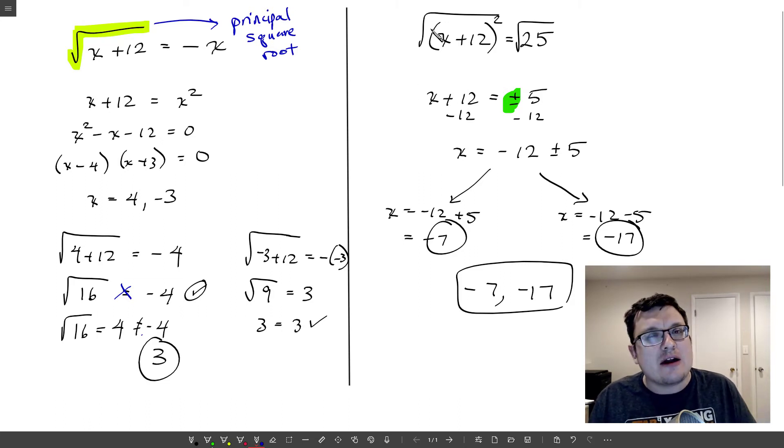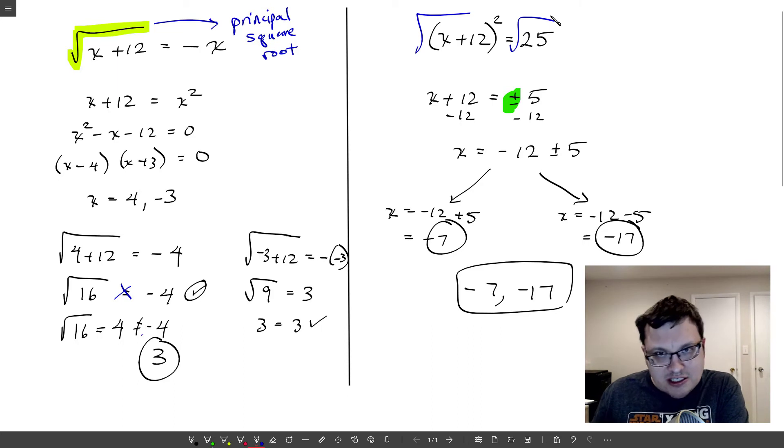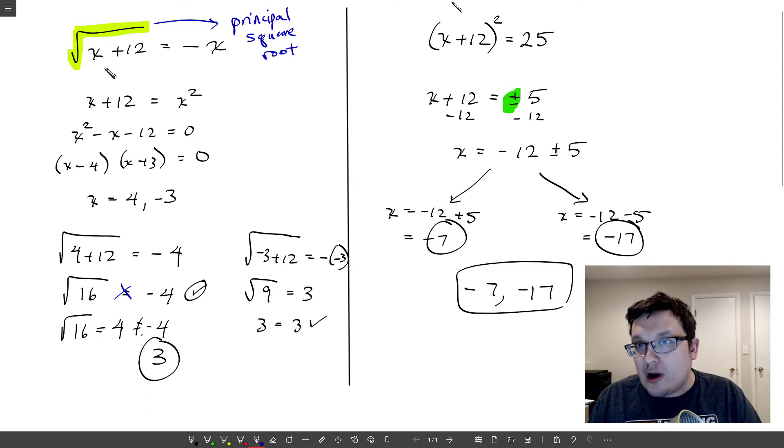But wait a minute, why doesn't that hold here? I've taken a square root of both sides here, why do I get negative five? Because if you look at the original problem, the original problem did not have that square root symbol in it. We ourselves, in the process of doing the algebra, put the square root in.